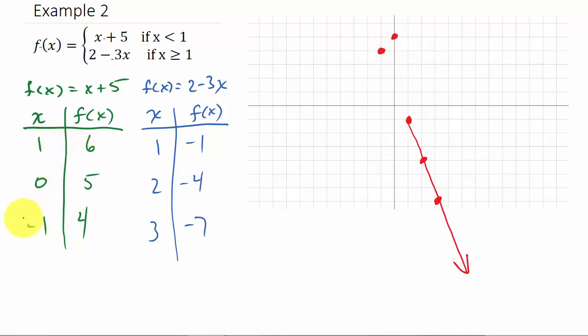And then 1, 6. So 1, 6 would be right here. But remember, that point is not included. So what I do, instead of drawing my point like this, my point is an open circle. And that graph is going to look like that. And once again, I'm not going to continue up because once I get to x values larger than 1, it jumps to this graph. And so that's your graph there.